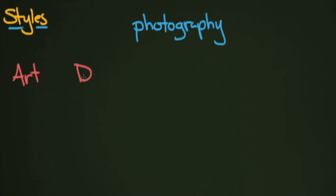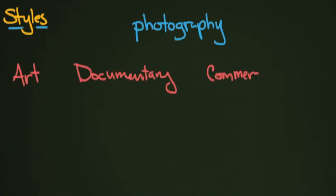We've got art photography, documentary photography, and commercial photography — and I'm going to put one more group called the X-group, which I'll talk about in a minute. Art photography is basically created with the artist in mind. The photographer is using photography to express themselves, to push the boundaries of the visual world. So art photography is in many ways about the photographer.